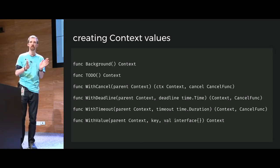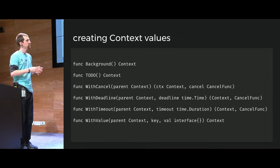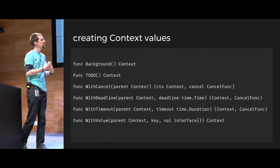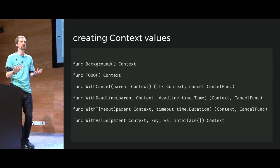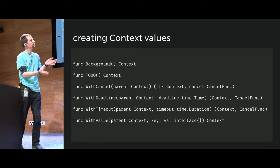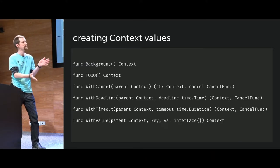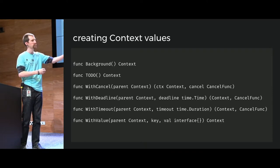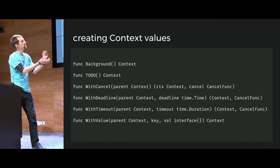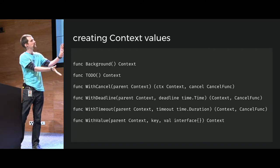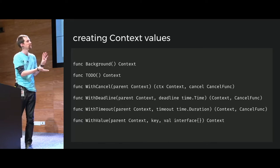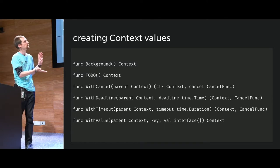So maybe you're a web server pinging several microservices in your architecture. You do that asynchronously and aggregate responses. But if any one of those takes too long, your whole request takes too long. Or if the client times out, you want to cancel all of the requests. You can take that context and pass it throughout your application, creating a tree structure that lets you manage each of the different parts of the dependent requests.